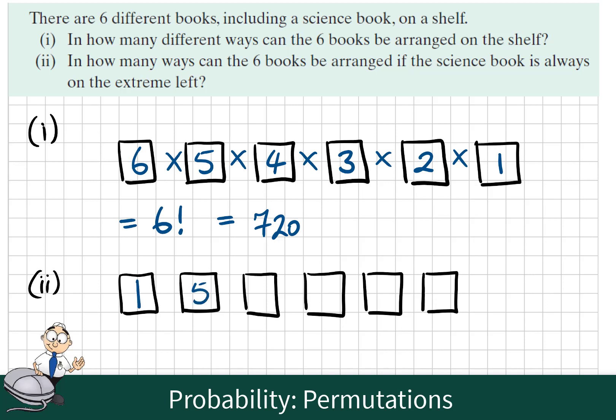Now there are five books left to choose from for the next and then four, three, two and one. So the answer to this question when we multiply our options would be one by five factorial, which is five factorial.